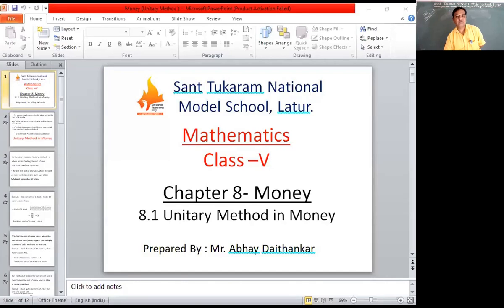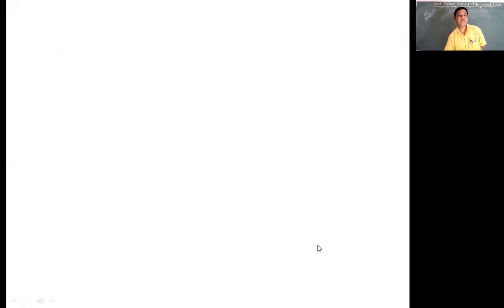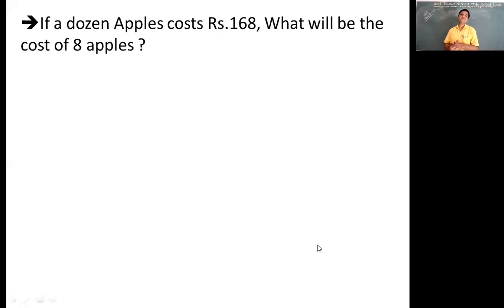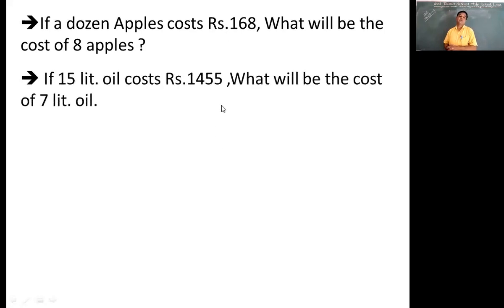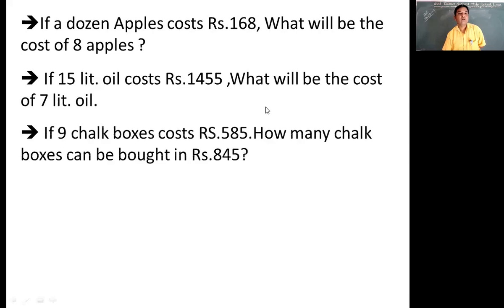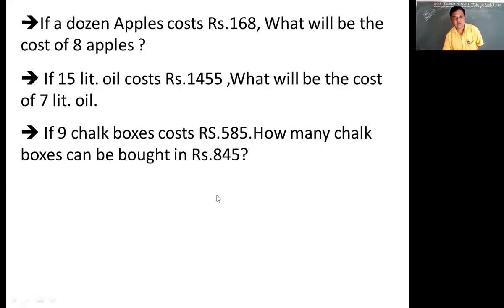So what is actually meant by the unitary method? Let us first of all see some examples. If a dozen apples cost you rupees 168, what will be the cost of eight apples? Then if 15 liters of oil cost you rupees 1455, what will be the cost of seven liters of oil? Then if nine chalk boxes cost you rupees 585, how many chalk boxes can be bought for 845 rupees?